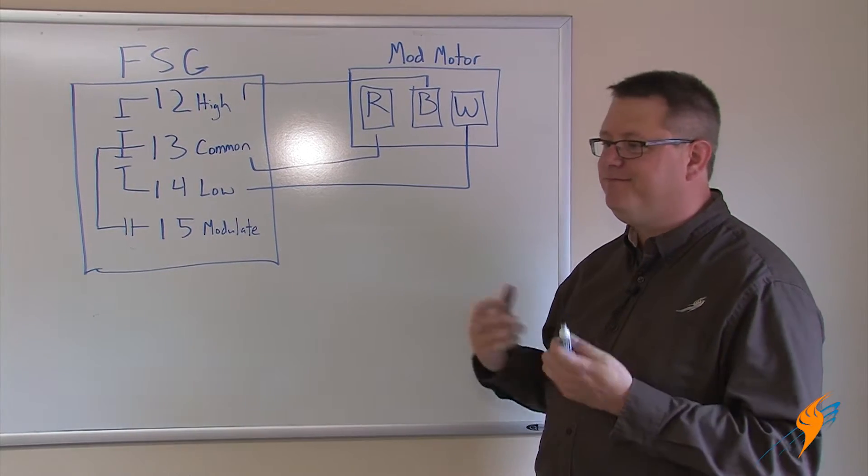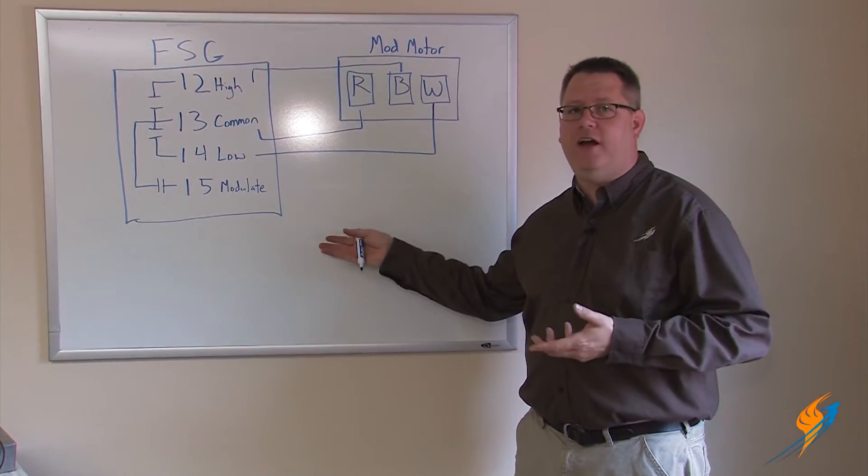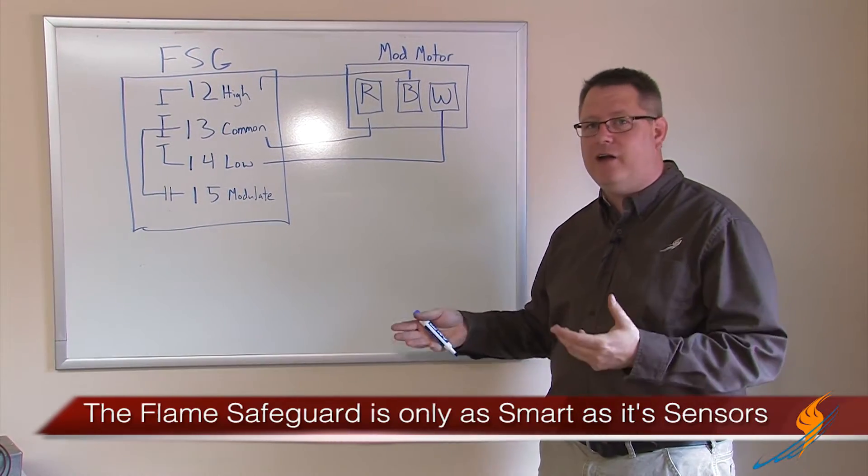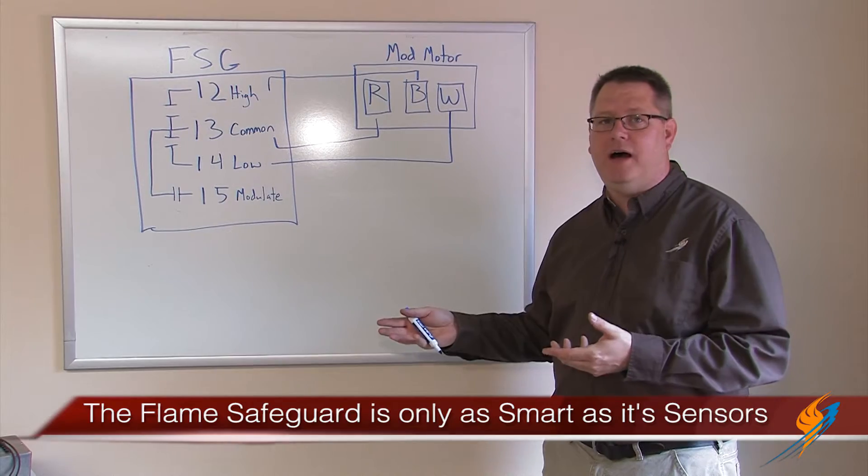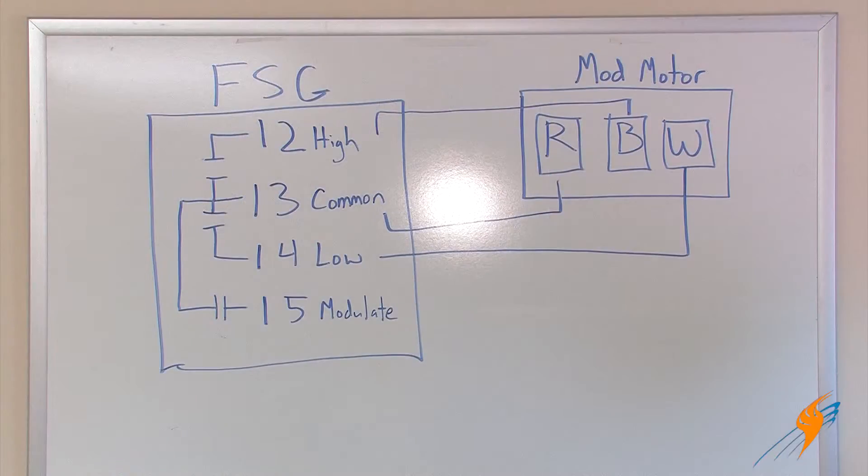Once we've lit off the burner and we're in low fire, the flame safeguard has no way of knowing what firing rate is required by the steam load. So how do we determine that and position the mod motor from there?